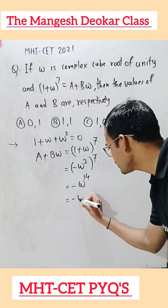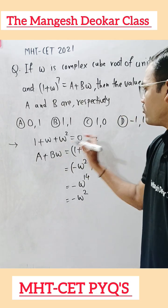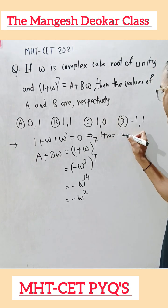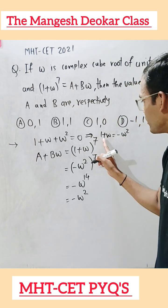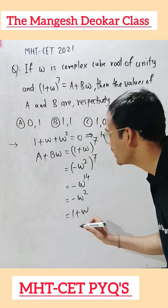The remainder is 2, so the answer will be -ω². Again, we have the relation 1 + ω = -ω². So we will replace -ω² by 1 + ω. This gives us 1 + ω.